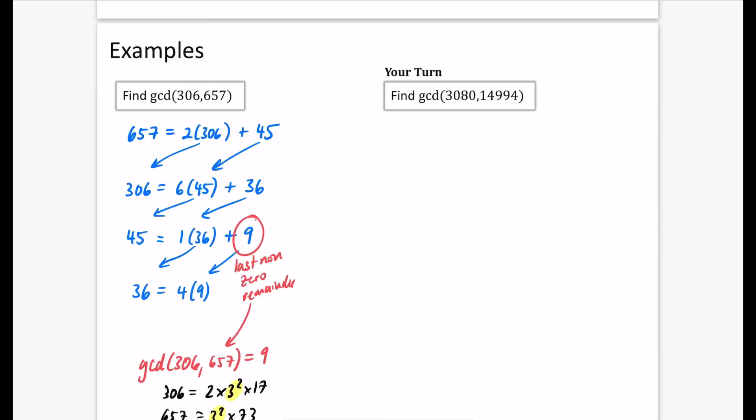So I want you to do it for some much bigger numbers now, because this is probably where the Euclidean algorithm kind of comes into play a little bit better. I want you to find the GCD, the greatest common divisor of these. So pause the video and have a go. And then you can see if you've got the same thing as me.